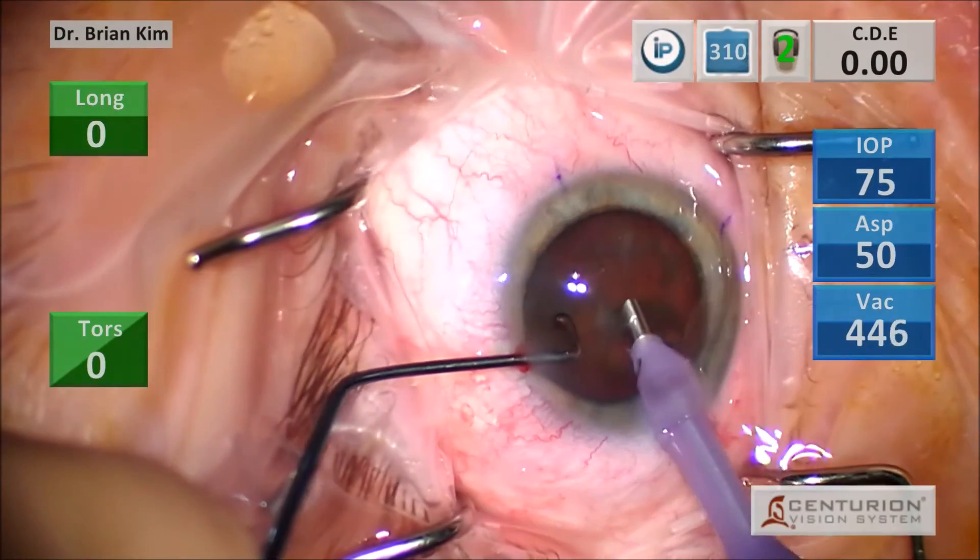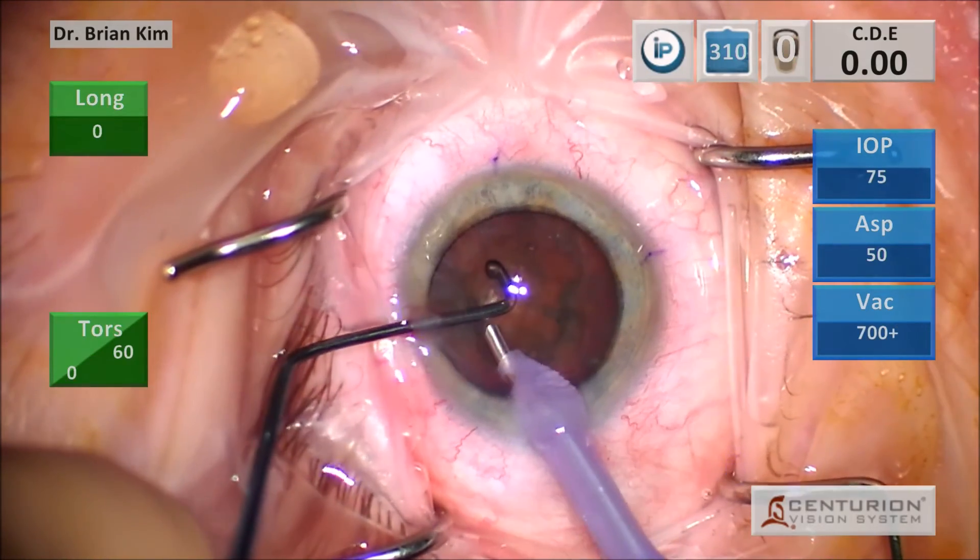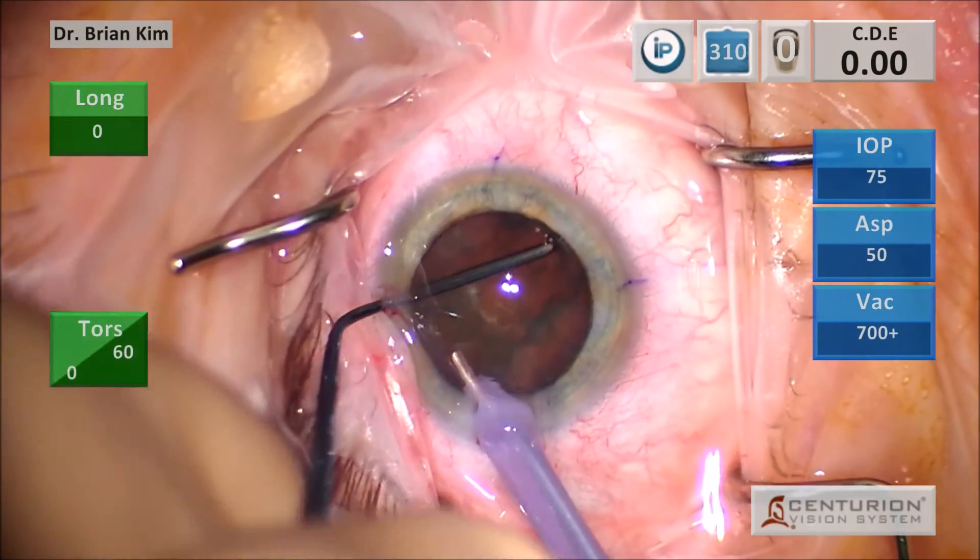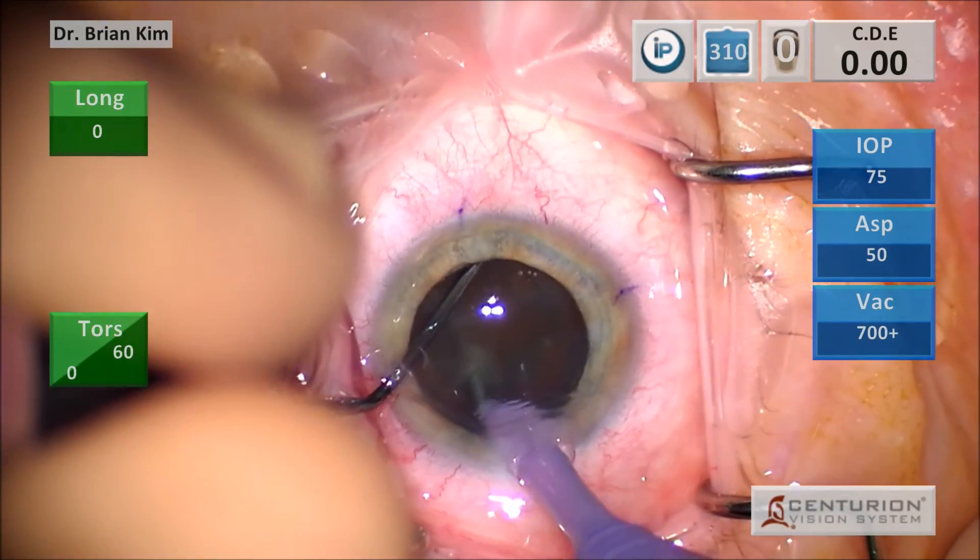I'm able to use that curvature to hold it and support the lens, but also impale the lens with that tip, with the double chop technique for these denser lenses. And you want to take advantage of that pointiness to that tip.